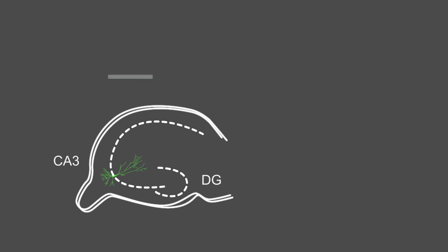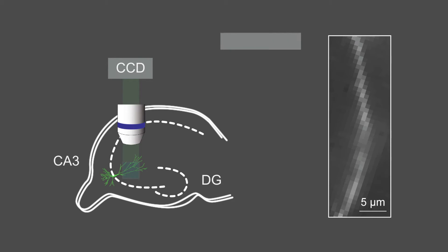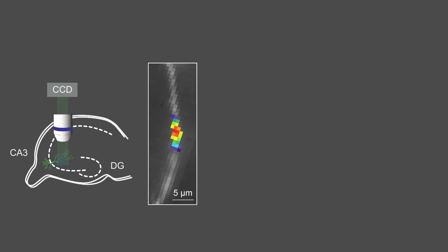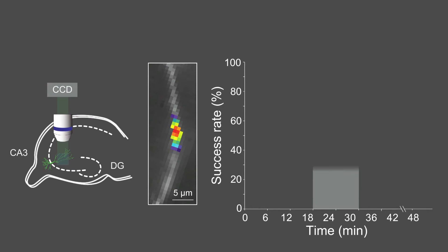We decided to test this idea by stimulating individual synapses in hippocampal slices, while recording the presence or absence of a corresponding postsynaptic response, in order to calculate the synaptic success rate. We found that the success rate of synapses that were stimulated out of sync with other activity on the dendrite underwent a significant reduction.